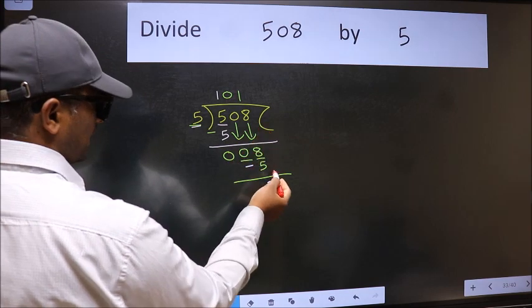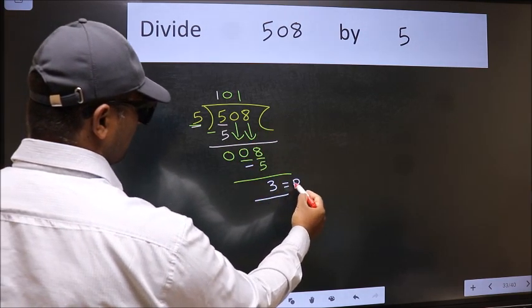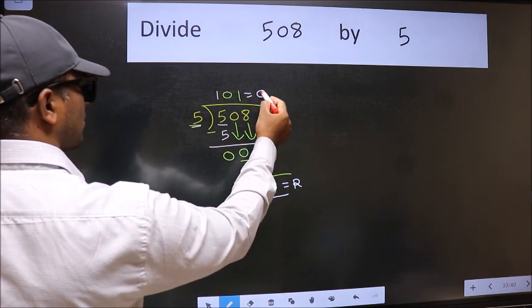No more numbers to bring it down, so we stop here. This is our remainder and this is our quotient.